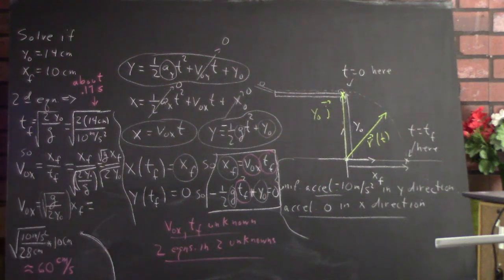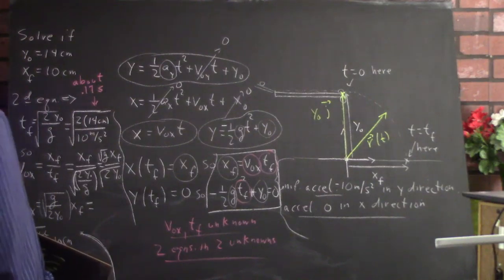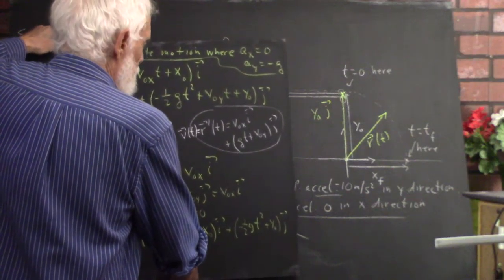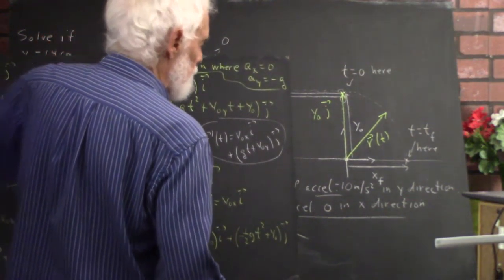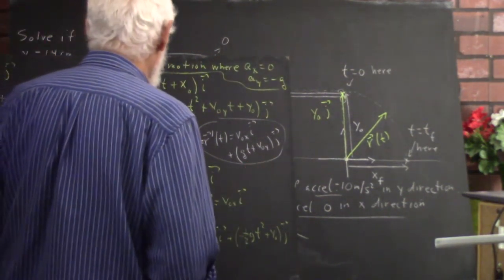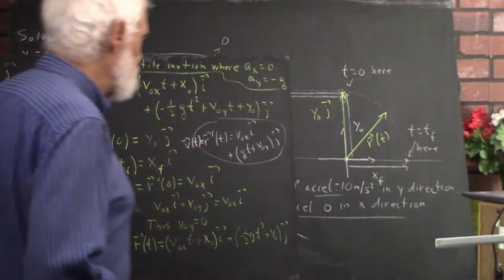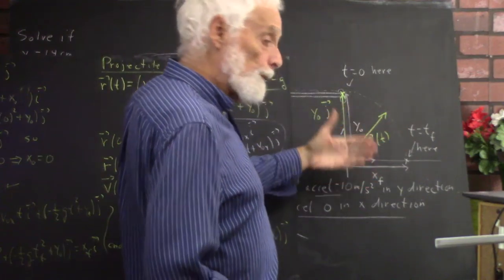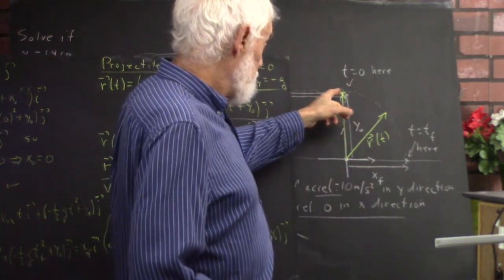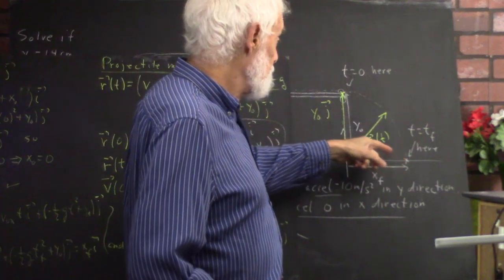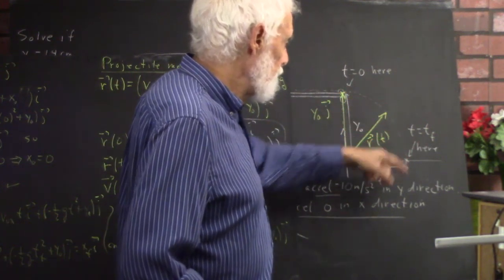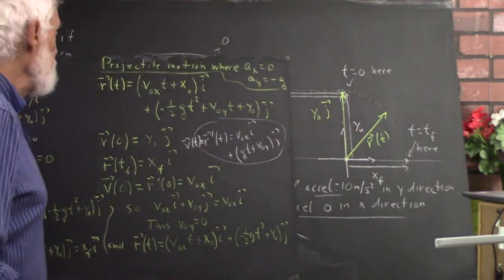Now there's another way to set this up — in terms of a single vector function. This leads to the same results. We have a vector r of t with an x-component and a y-component. The tip of the vector function, as t goes from zero to t-sub-f, will trace out the path of the projectile.